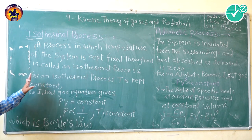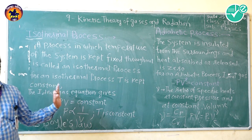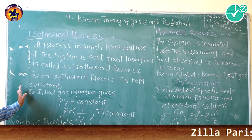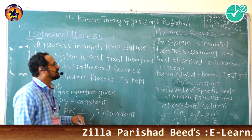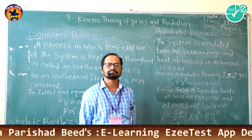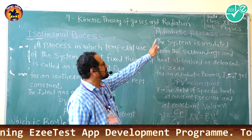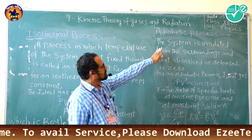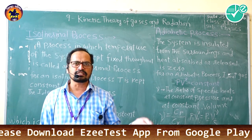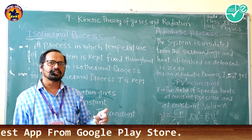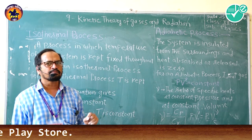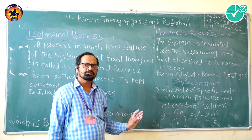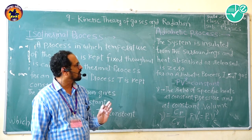This isothermal process is a very slow process because temperature is constant, so there is change in pressure and volume and it will be a very slow process. The next process is called the adiabatic process. In an adiabatic process, the system is insulated from the surrounding. The system is separated from the surroundings by boundaries around the system.